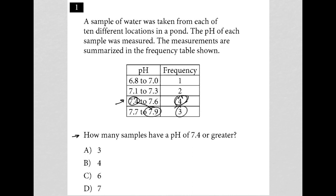So 7.4 to 7.9. So there are seven total, right? Four plus three. There's seven total samples that have a pH of 7.4 or greater.